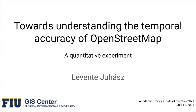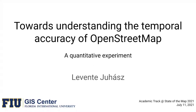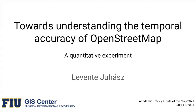My talk is about the temporal accuracy of OpenStreetMap and an experiment that I conducted on this. It's largely an ongoing effort and I'm very much open to feedback and suggestions. I'm going to start with generally talking about the temporal component of volunteer geographic information (VGI), then explain my study setup, discuss some results I already have, and close by discussing potential future work.